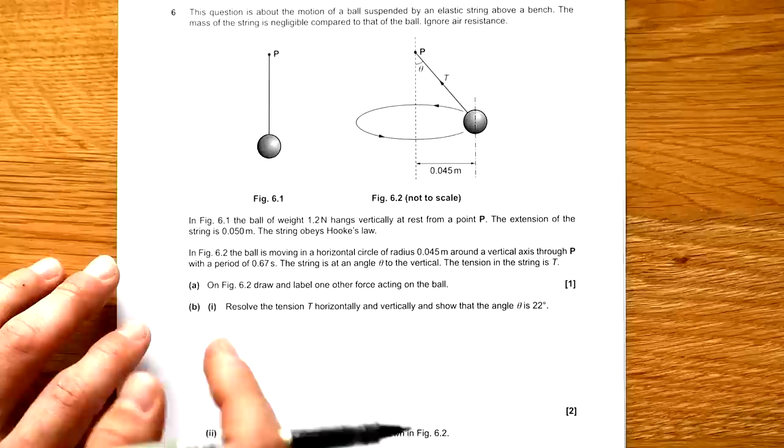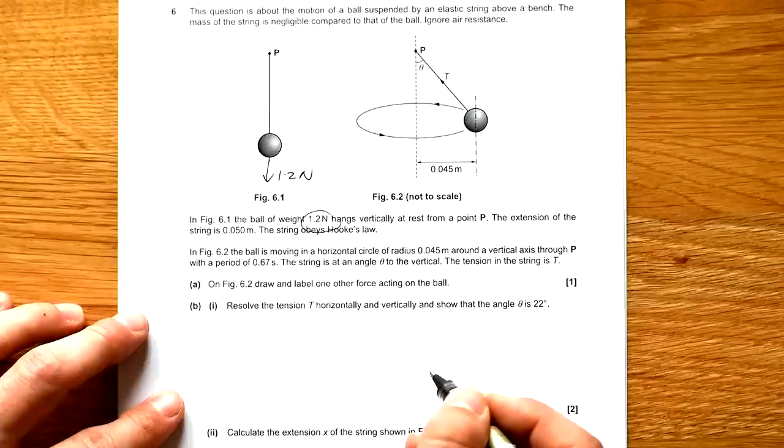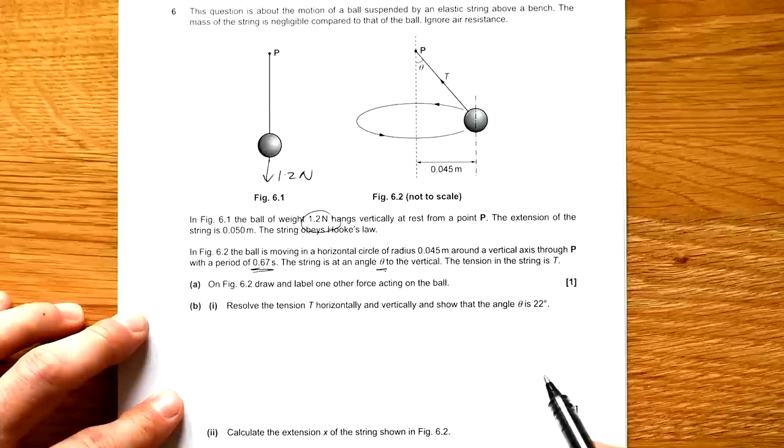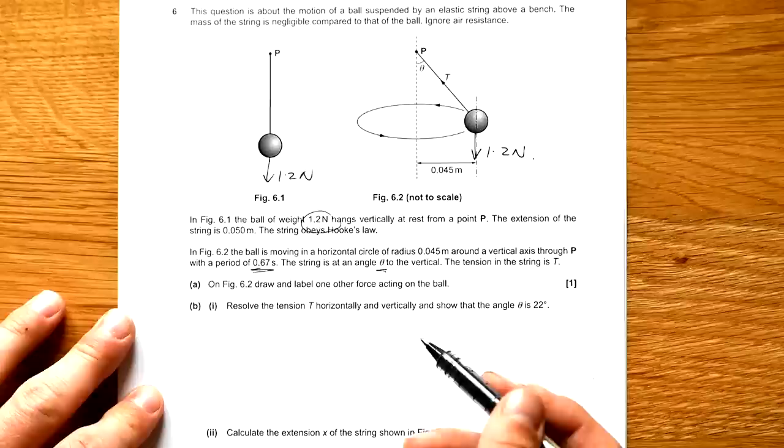Last question, question six. The question is about the motion of a ball suspended by an elastic string above a bench. Mass of string is negligible compared to the height of the ball. Ignore air resistance. Figure 6.1, the ball of weight of 1.2 Newtons hangs vertically at rest. Extension of the string is that. String obeys Hooke's law. What a good string. Figure 6.2, the ball is moving in a horizontal circle of radius 0.045 meters around vertical axis P, period 0.67 seconds. The string is at an angle theta to the vertical. The tension of the string is T. On figure 6.2 draw and label one of the force acting on the ball. Of course, we have our weight.